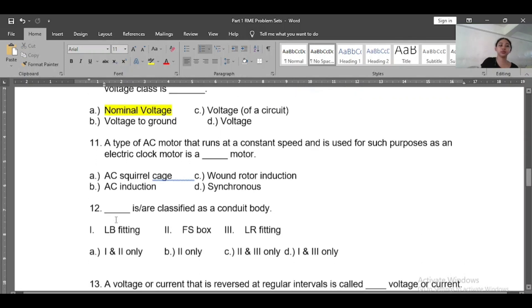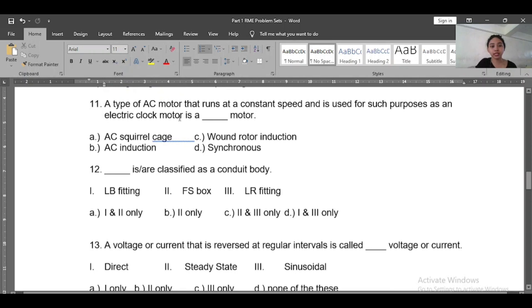Number eleven: A type of AC motor that runs at a constant speed and is used for such purposes as an electric clock motor is a blank motor. What is this? That runs at a constant speed - so it is a synchronous motor.